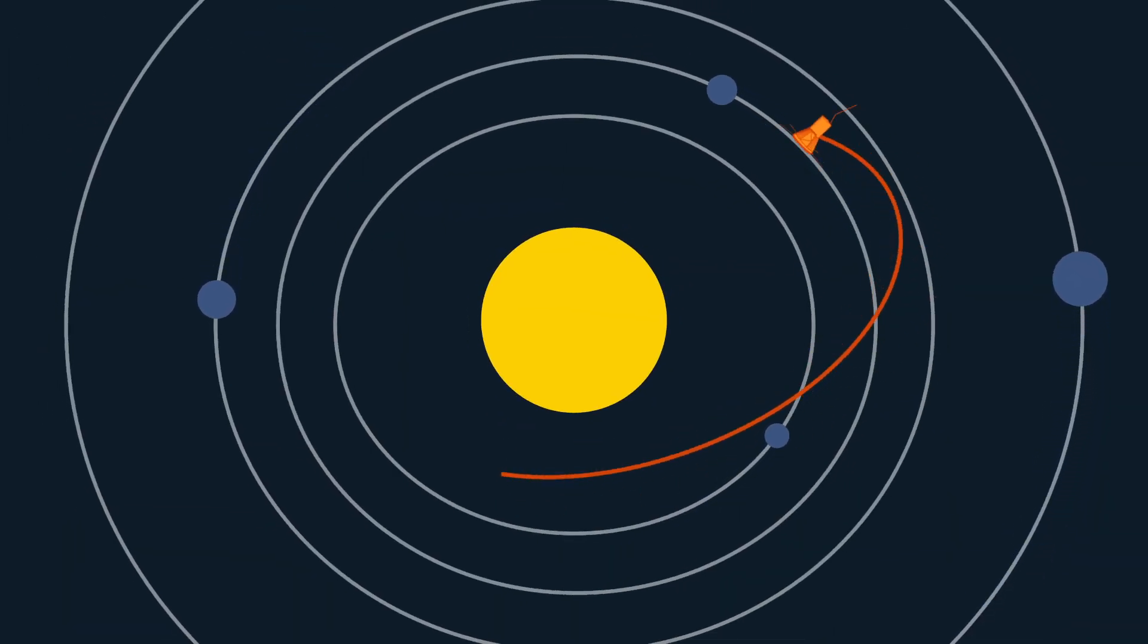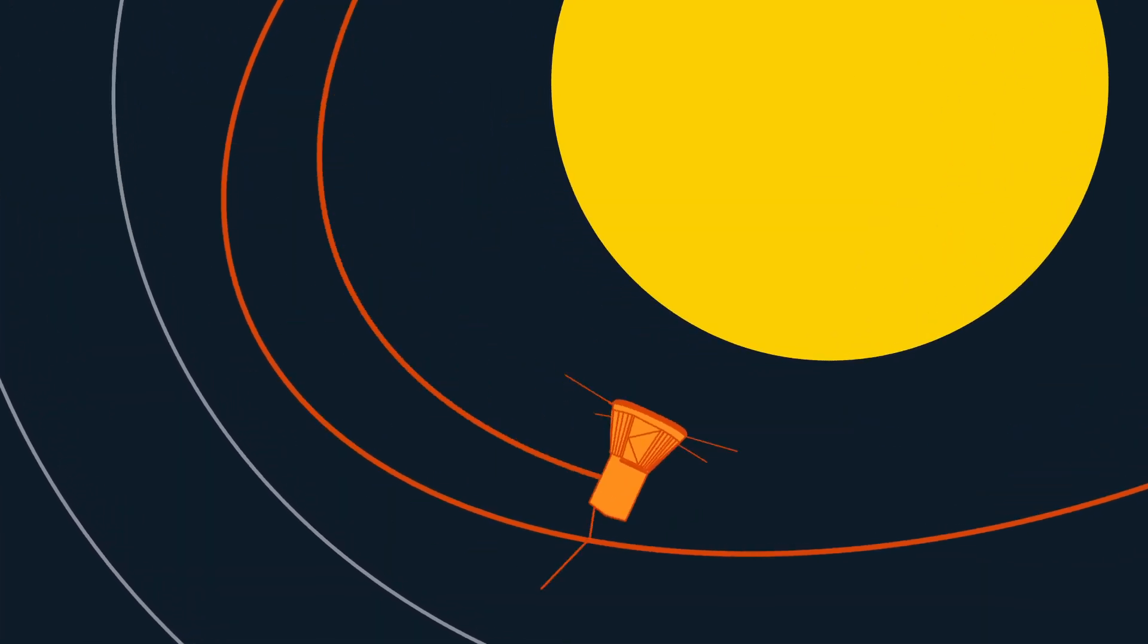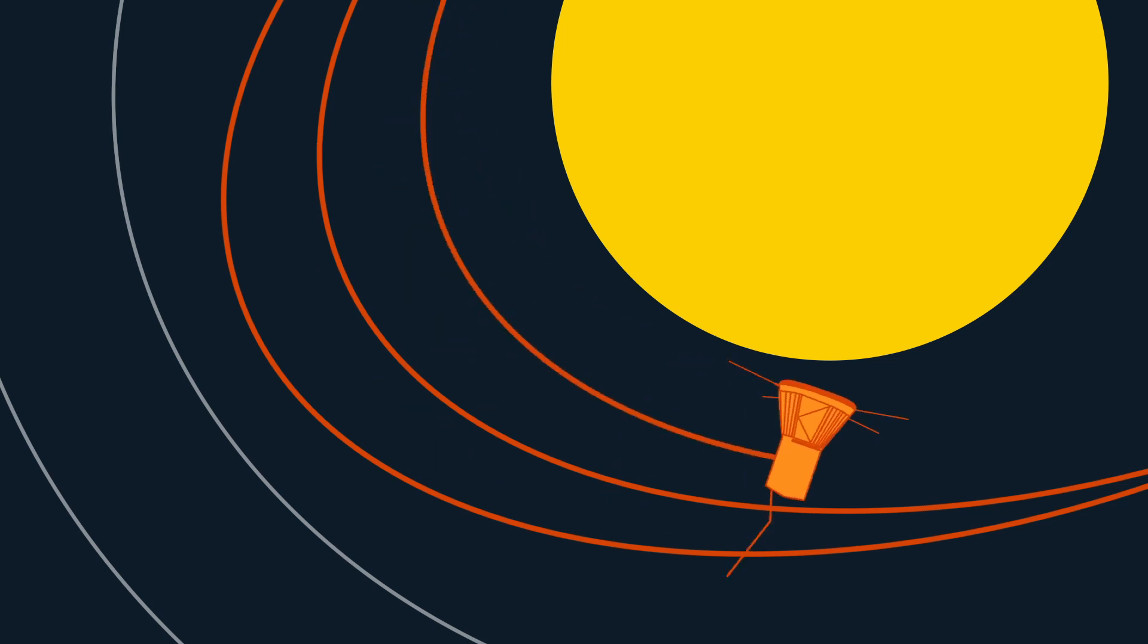It zips around the inner solar system at hundreds of thousands of miles an hour. And with a set of Venus gravity assists, it gets closer and closer to our star.